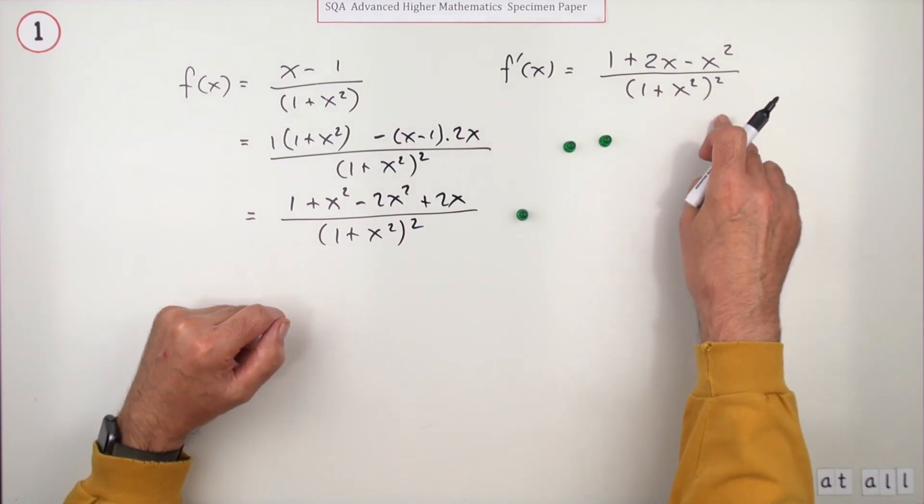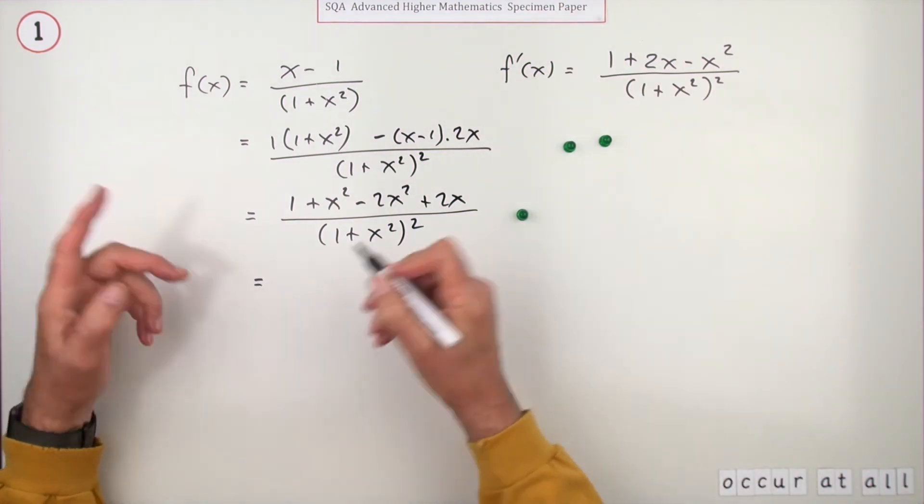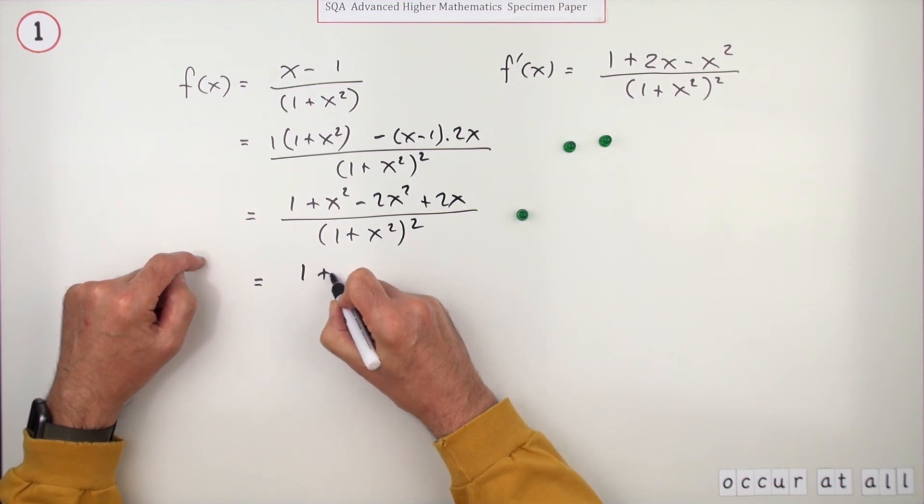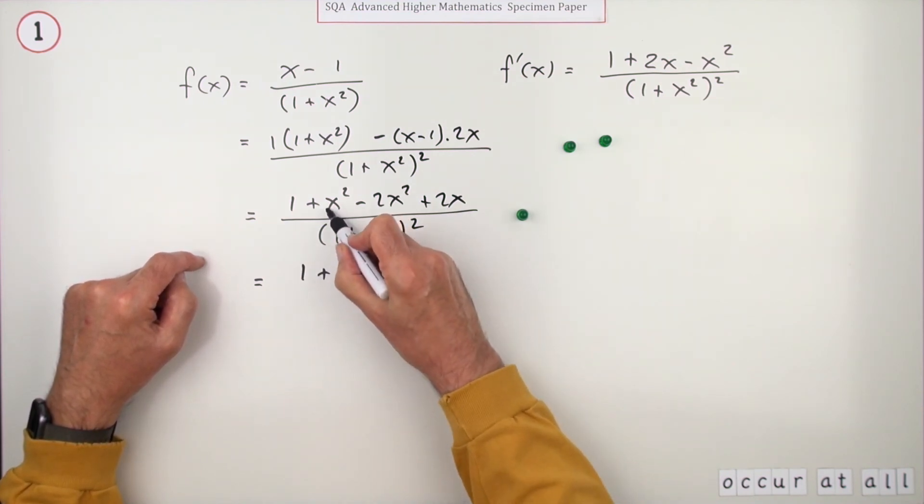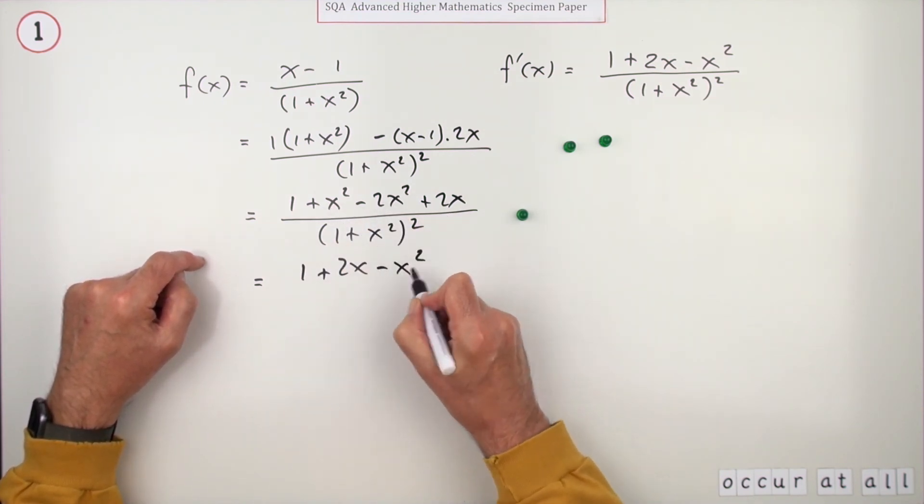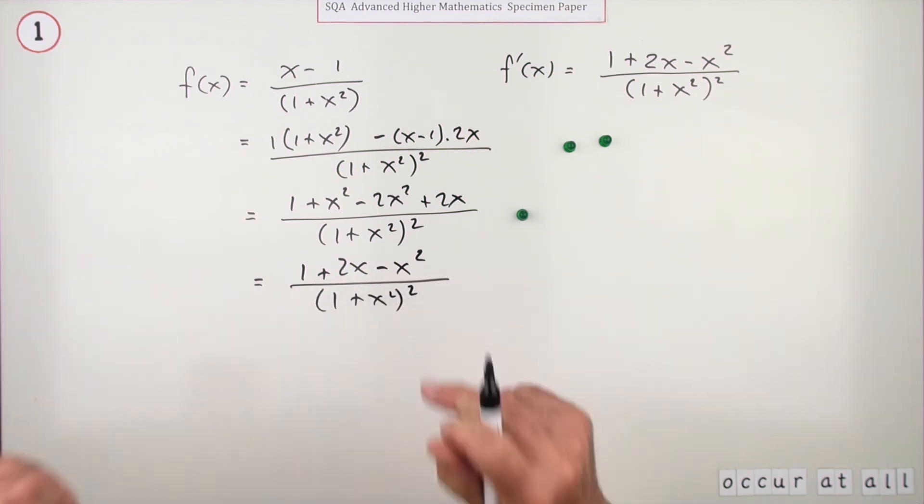But you should still be neat and just write it down anyway. One plus the 2x, one of them, take away two of them minus an x squared, over the square of the original denominator. There you go.